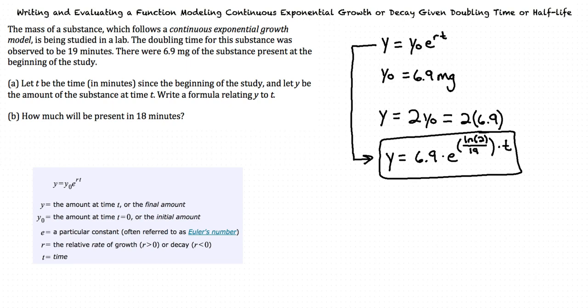For part b, it asks how much will be present in 18 minutes. So for which variable do we substitute 18? 18 minutes is a time, so we substitute it in for t. We substitute 18 in the equation and solve for y. This results in 13.3 milligrams present after 18 minutes. And this makes sense because it is an exponential growth problem.